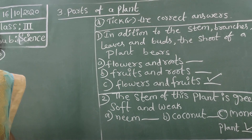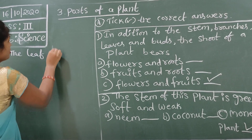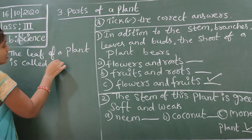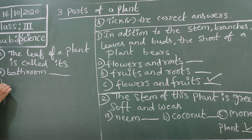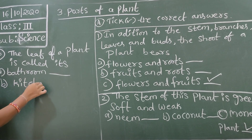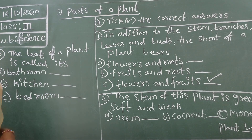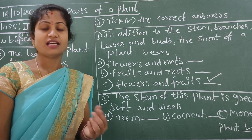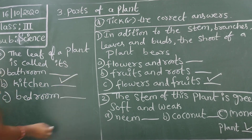Third one: the leaf of a plant is called its - A: bathroom, B: kitchen, C: bedroom. Which room do we cook food in? The kitchen. So leaves also prepare food for the plant through photosynthesis. The correct answer is kitchen.